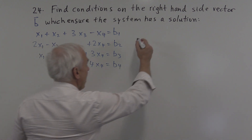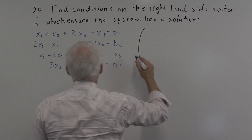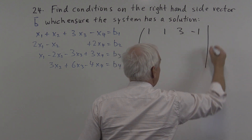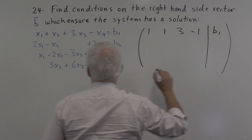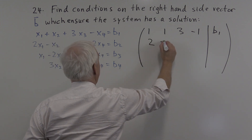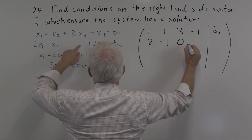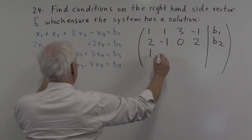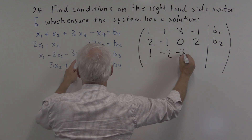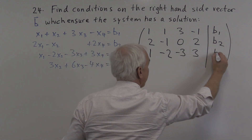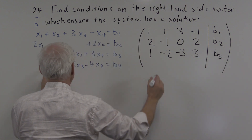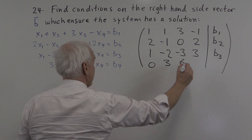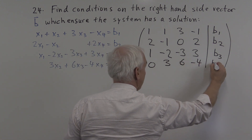We'll just carry them along in the row reduction and see what we get at the end. Let's start by writing an augmented matrix for the system: 1, 1, 3, minus 1, and b1 on the right-hand side. Then the second equation: 2, minus 1, 0, 2, and b2. Then x1 minus 2x2 minus 3x3 plus 3x4 equals b3. And finally, 0x1 plus 3x2 plus 6x3 minus 4x4 equals b4.